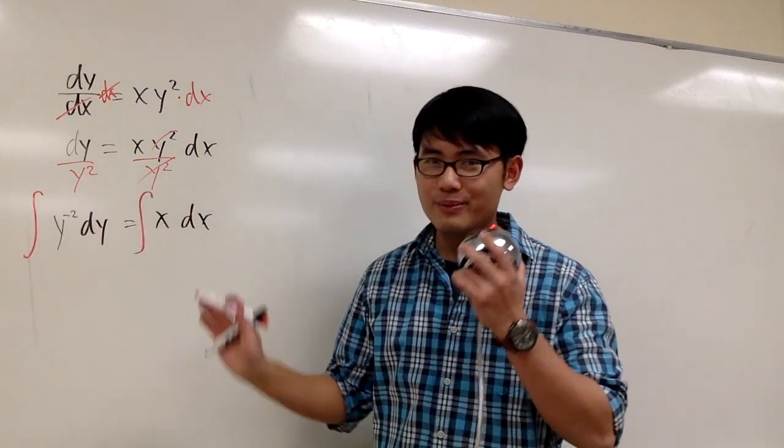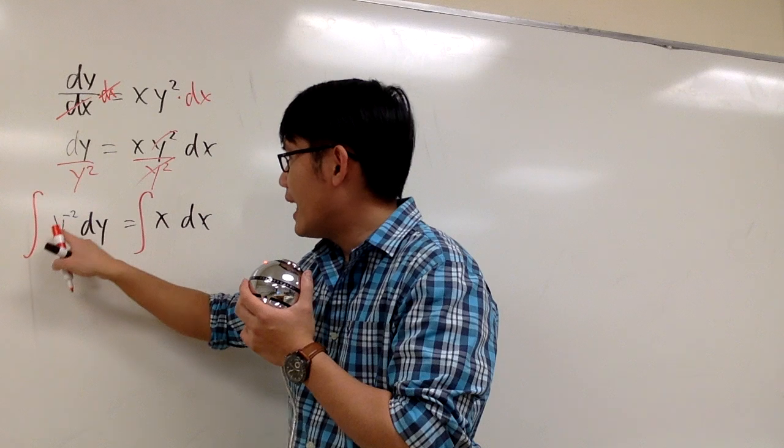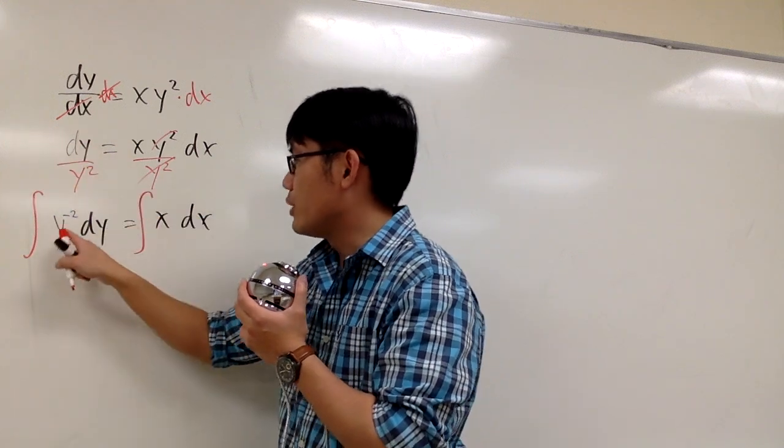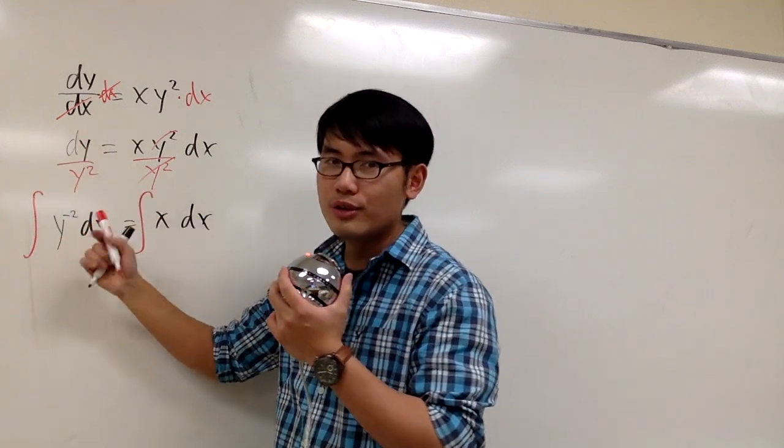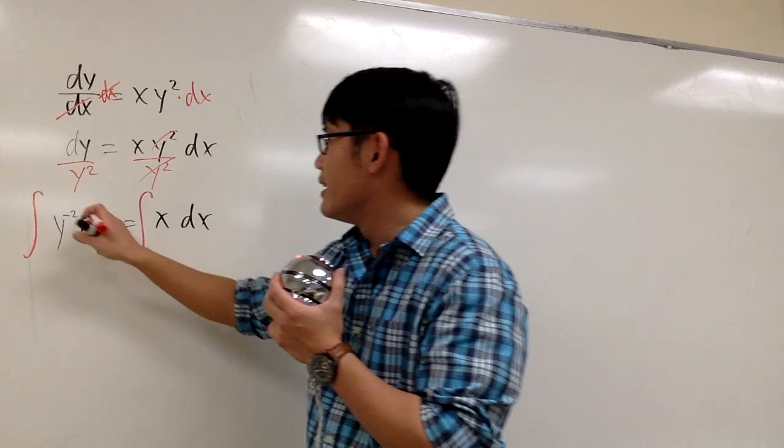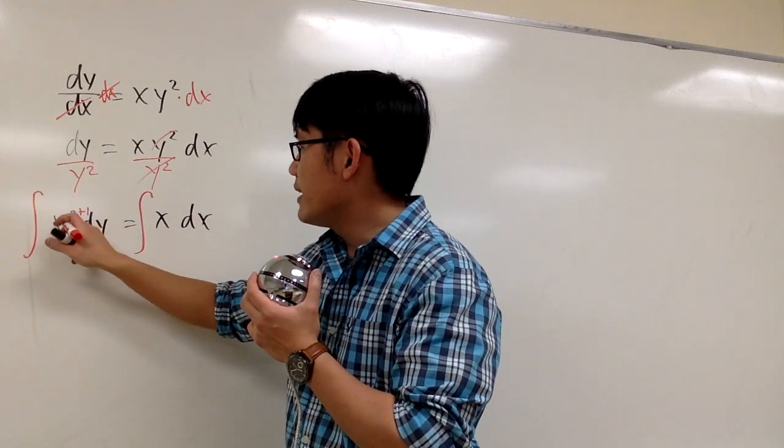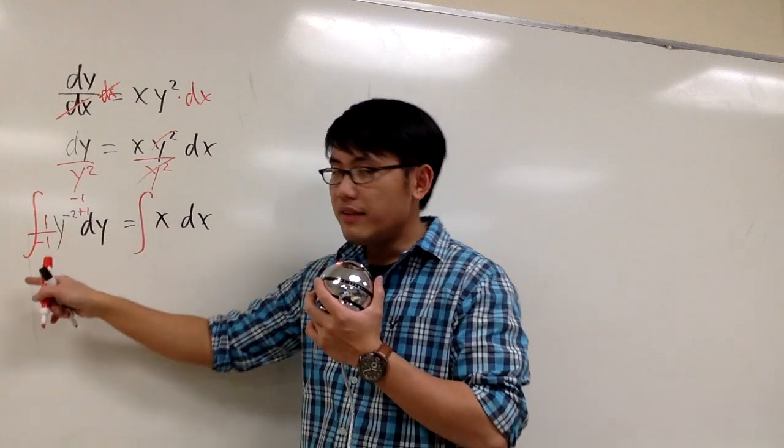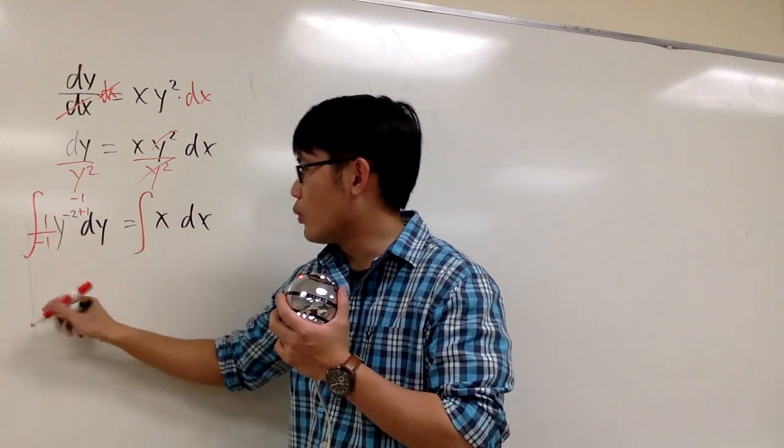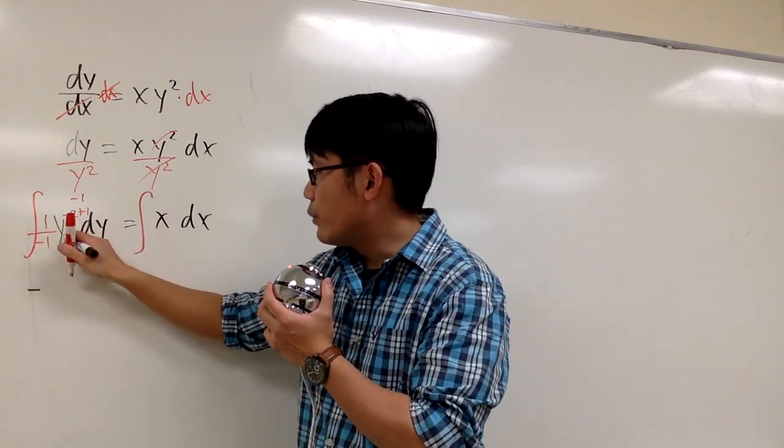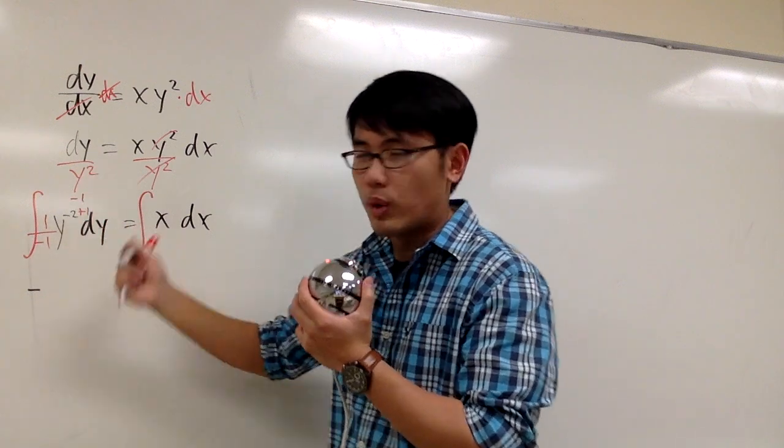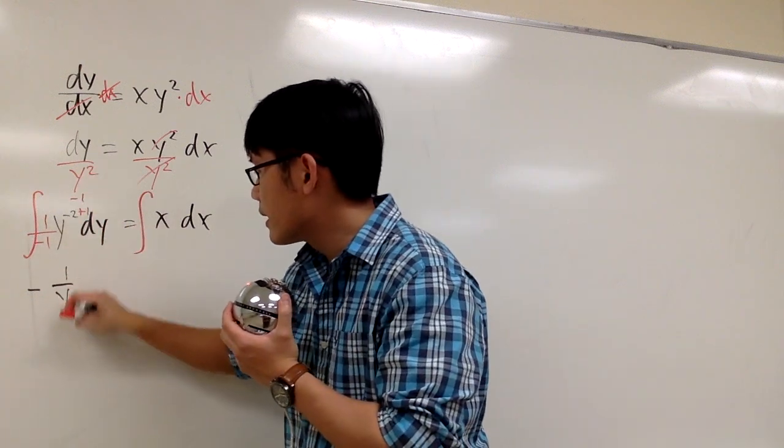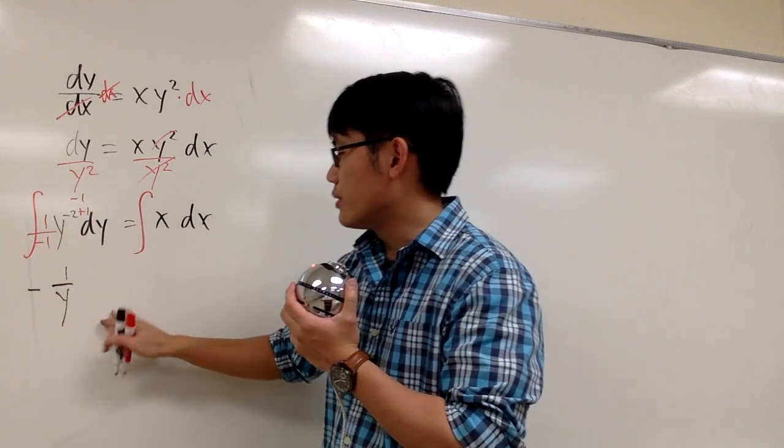And then here comes the detail. Be careful. Here we have originally 1 over y squared, but I look at this as y to the negative 2, so I get to use the reverse power rule. Plus 1, negative 2 plus 1 is negative 1, and then I divide it by negative 1. So on the left-hand side, I have 1 over negative 1, which is negative. And we have y to the negative 1, and that's 1 over y. So that's just integration. No big deal.